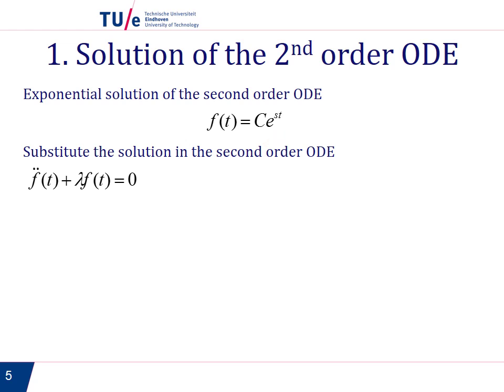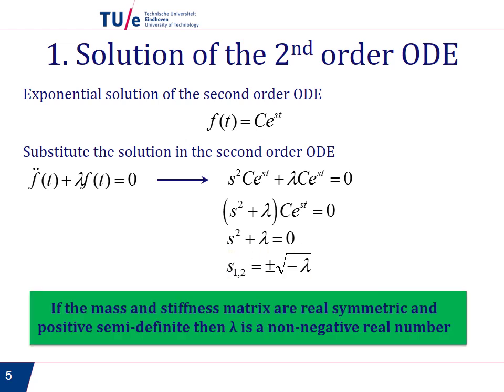If we substitute this in the differential equation, we find that since c and e^(st) are not zero, the only way this equation can be fulfilled is if s² + λ = 0. From here we find that s is plus or minus the square root of minus λ.